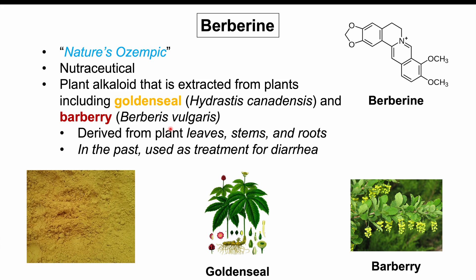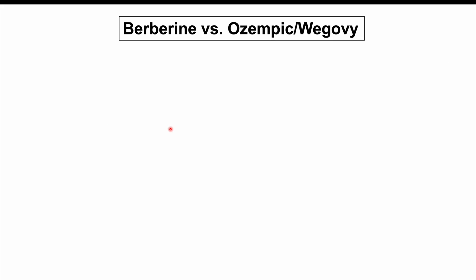In the past, berberine has been used as a treatment for particular forms of diarrhea. But more recently it's been gaining traction as a potential treatment for health conditions like type 2 diabetes and obesity, with findings showing it can improve insulin sensitivity and help with weight loss. Before discussing those research findings in detail, let's talk about how berberine works biochemically and compare that to how ozempic works.